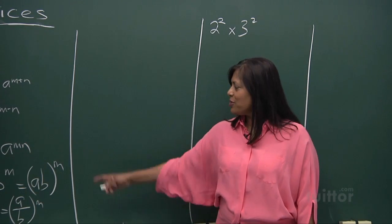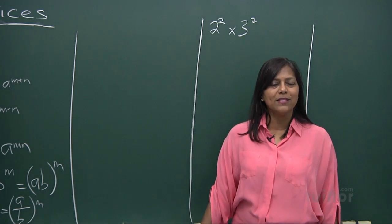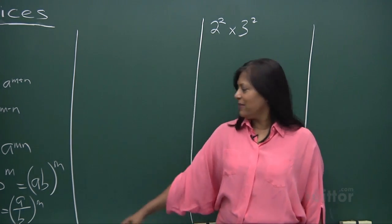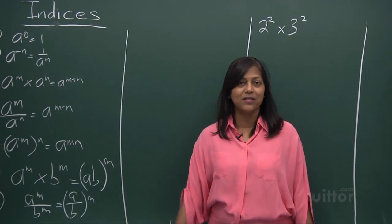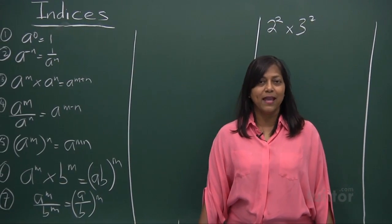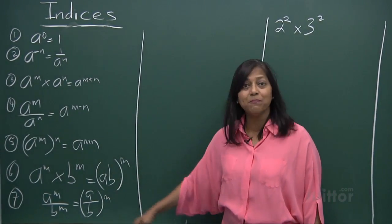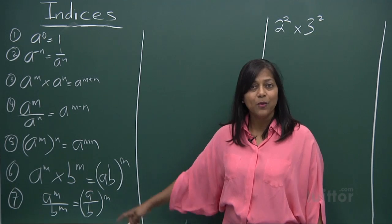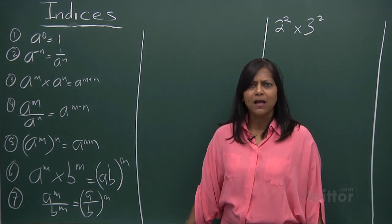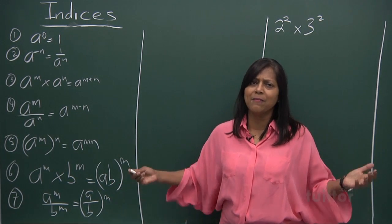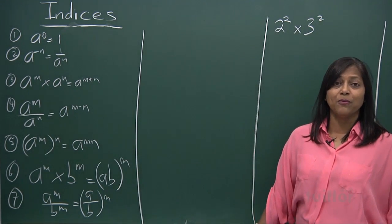We're talking about the laws of indices — the 5th, 6th, and 7th law. The first is a^m times b^m gives you (ab) to the power of m. How does that come about? Let's do a little bit of exploration.